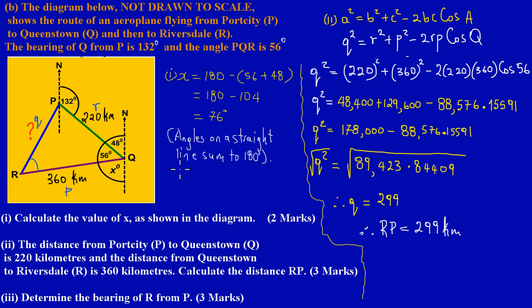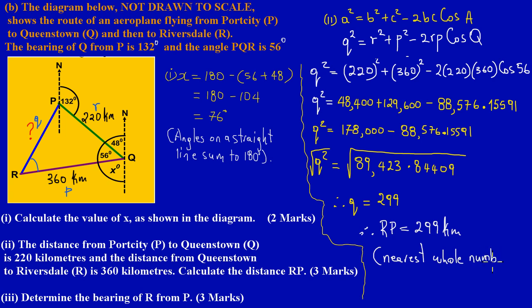In the previous video we looked at solving question 10 parts B1 and B2. Here we have our solutions. Please note that the value 299 kilometers for RP was rounded off to the nearest whole number. We have the measurements for all three sides now, and in part 3 they're asking us to determine the bearing of R from P.